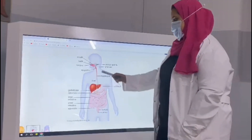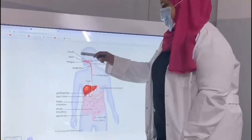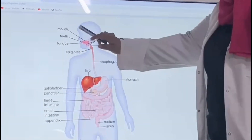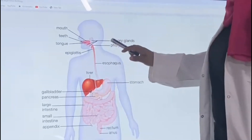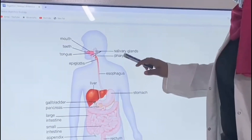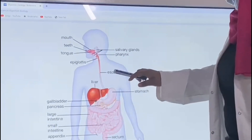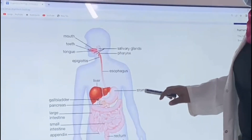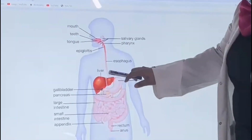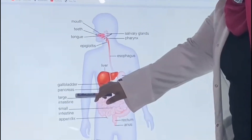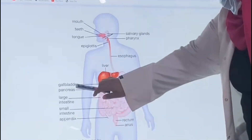The digestive system includes the mouth, salivary glands, esophagus, stomach, liver, small intestine, large intestine, and rectum. Thank you.